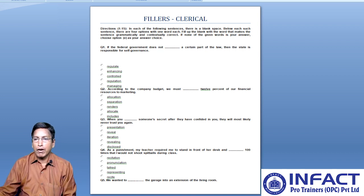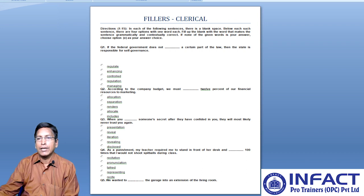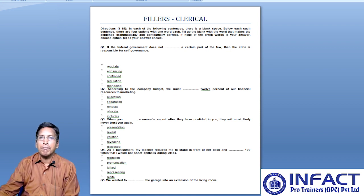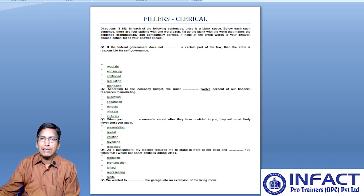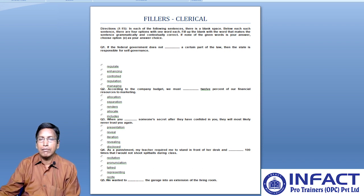You have five options: option one, allocation; option two, separation; option three, renders; option four, allocate; and option five, includes. The statement is trying to convey that the company is expected to set aside some amount to be used for a particular purpose.